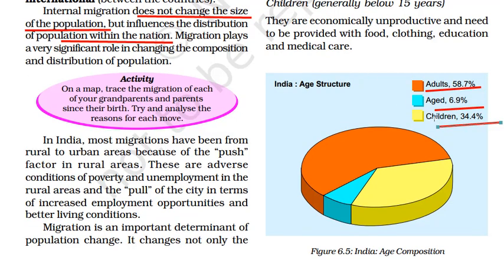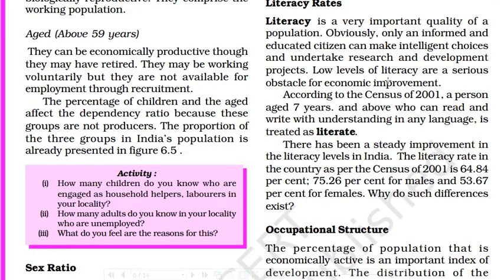The children age group of 34.4% are economically unproductive and should be provided with food, clothing, education, and medical care. The adults at 58.7% are the most productive people and contribute greatly to India's economy. Aged people above 59 years can be economically productive — though they may have retired, they may be working voluntarily or are not available for employment through regular recruitment. The percentage of children and aged people affects the dependency ratio because these groups are not producers, making the working class population the most important factor.